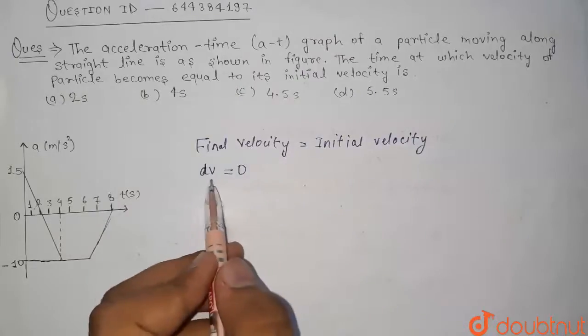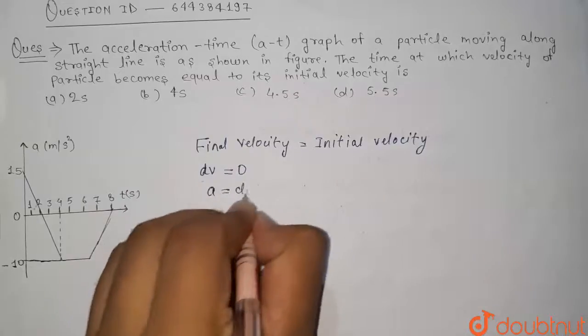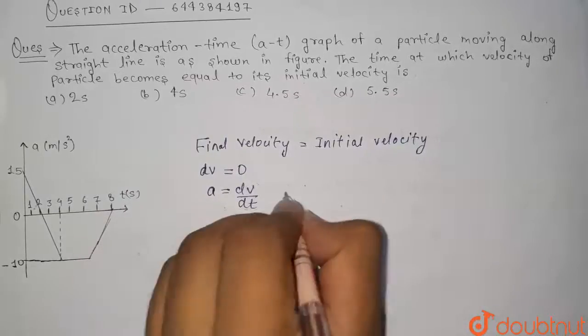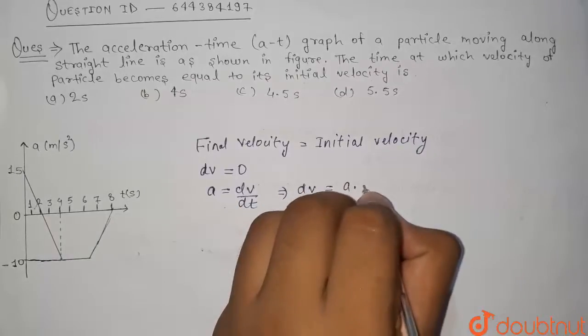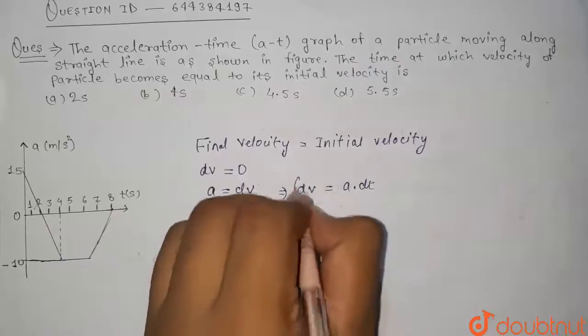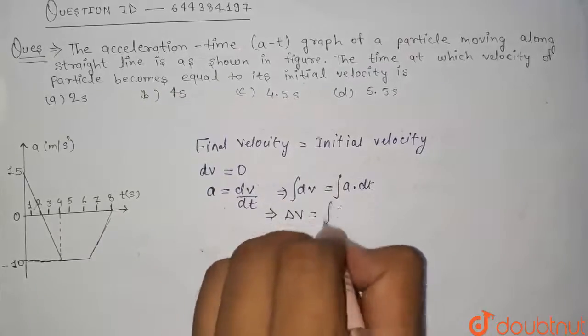Then dv, that is change in velocity, will be equal to 0. And we know that acceleration is dv by dt, or from here we can say that dv is equal to acceleration a into dt. Integral of a dt, and this comes out to be delta v is equal to integral of a dt.